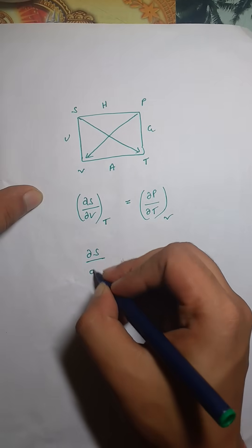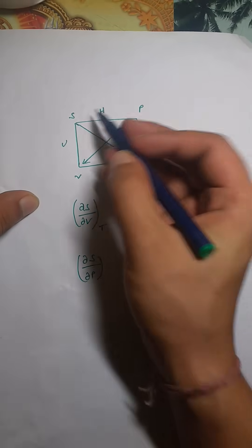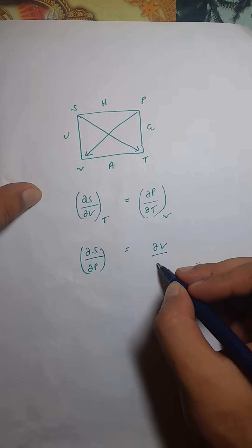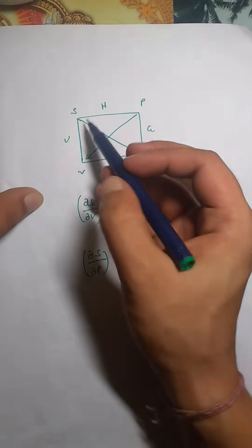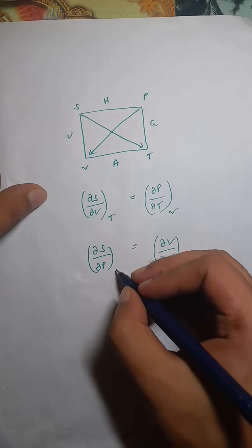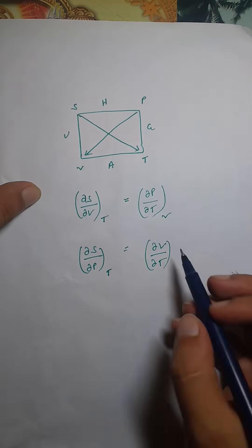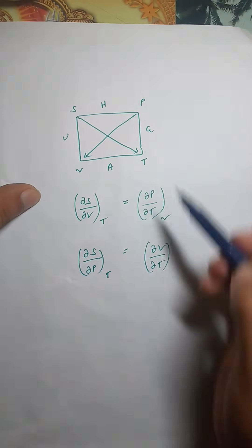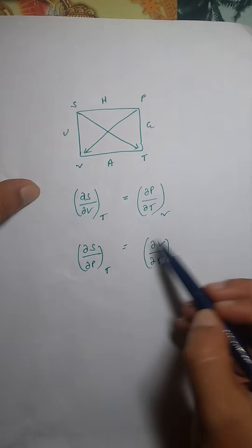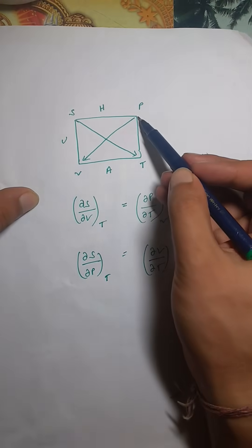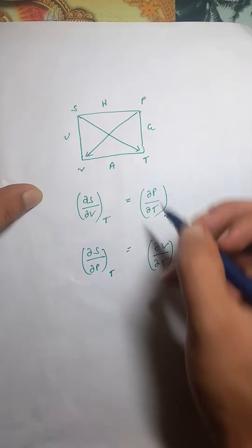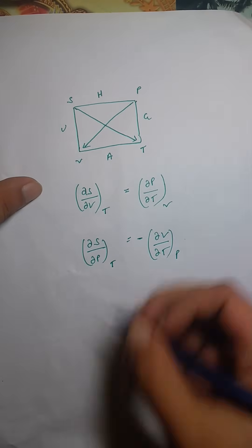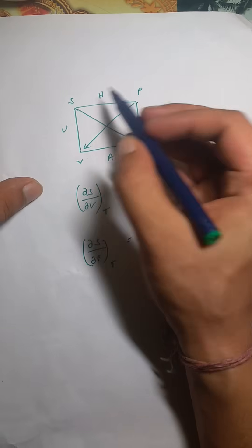Now take S and P: write (∂S/∂P). The opposite of S and P is V and T, so we write (∂V/∂T). The arrow goes from S to T, so we have constant temperature. For volume, the arrow goes from P to V but we have V in the numerator, so we're going from V to P — opposite direction — giving a negative sign at constant pressure. Second Maxwell relation: (∂S/∂P)_T = -(∂V/∂T)_P.